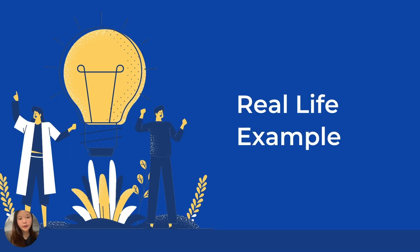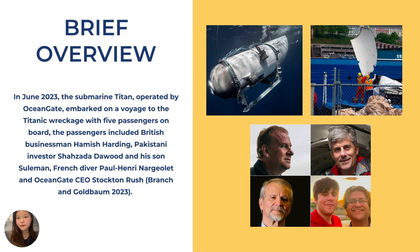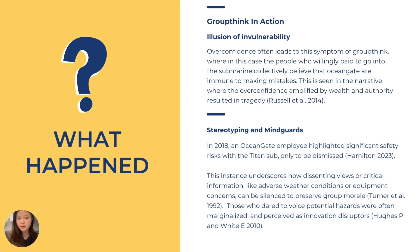I'll now pass it to Catherine. We'll be providing real-life examples of ineffective and effective work teams. The first example is the OceanGate submarine implosion in 2023. In June 2023, the Titan, a submarine operated by OceanGate, embarked on a journey to the remains of the Titanic. However, the submarine imploded 12,500 feet below the surface and all passengers were declared deceased. Regarding groupthink, the illusion of invulnerability led passengers who paid significant sums to board the Titan to believe that OceanGate was incapable of error. This overconfidence led to a tragic illusion of invulnerability — they placed full trust in the organization, assumed flawless execution, and sadly it resulted in tragedy.